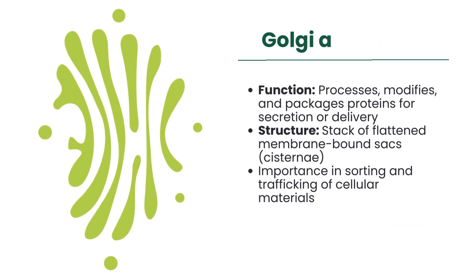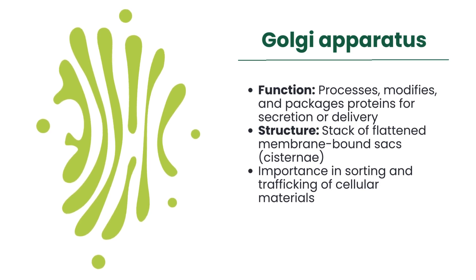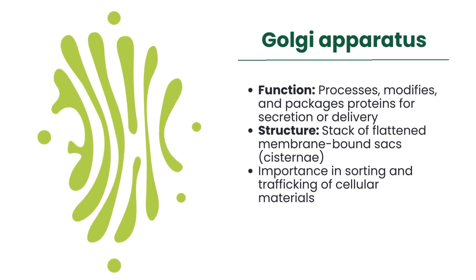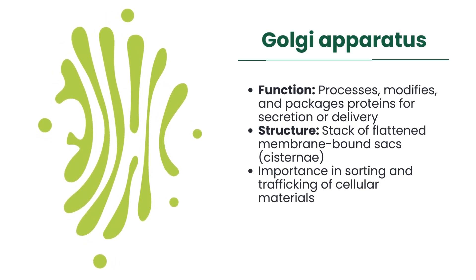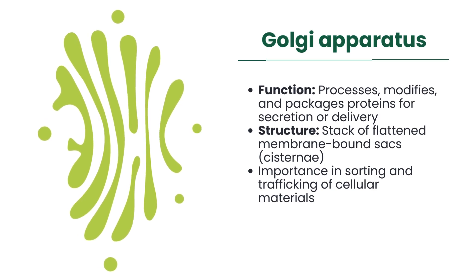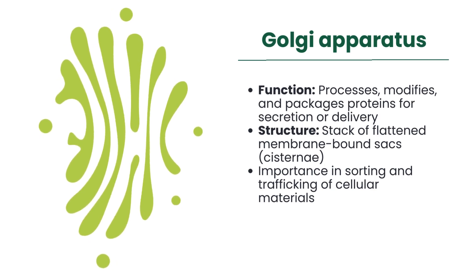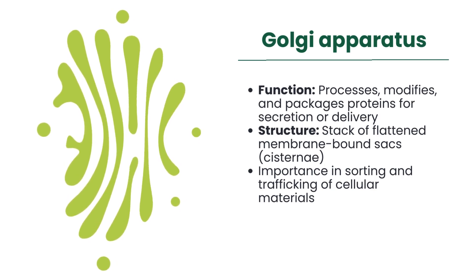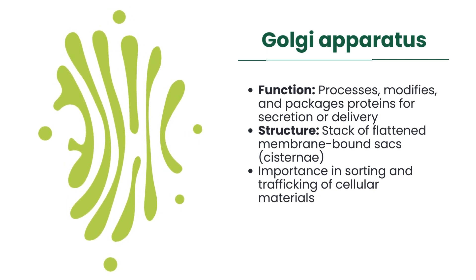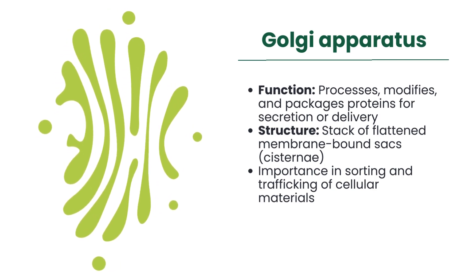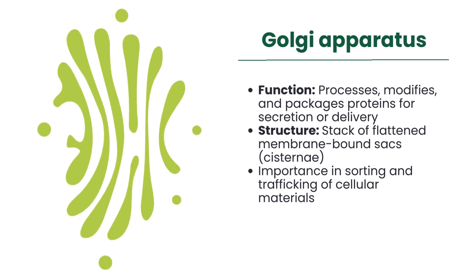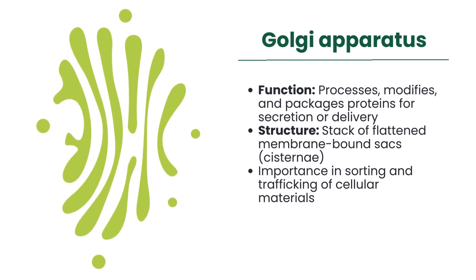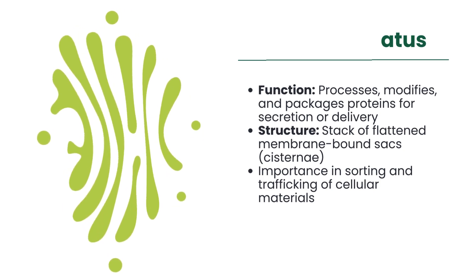The Golgi apparatus serves as the cell's post-office, processing, modifying, and packaging proteins for secretion or delivery to other parts of the cell. It ensures that proteins are properly sorted and transported to their intended destinations.